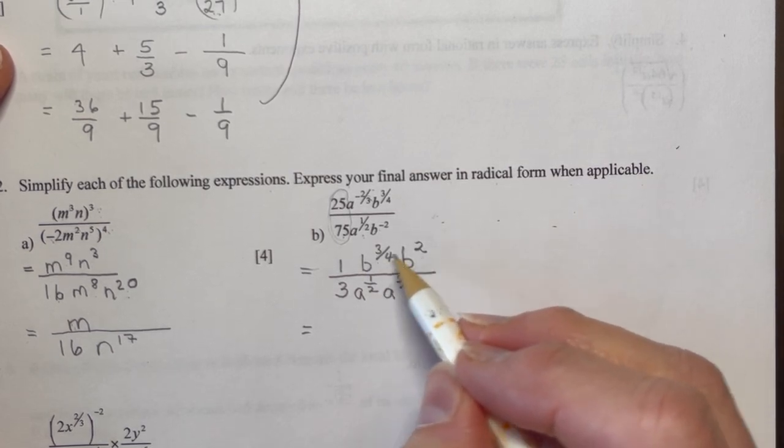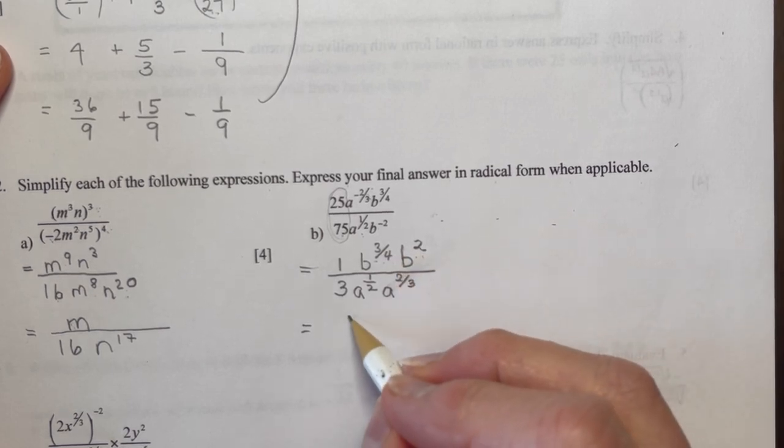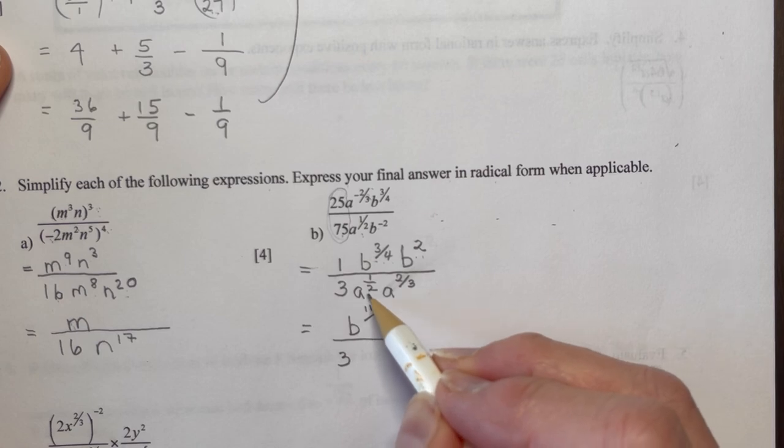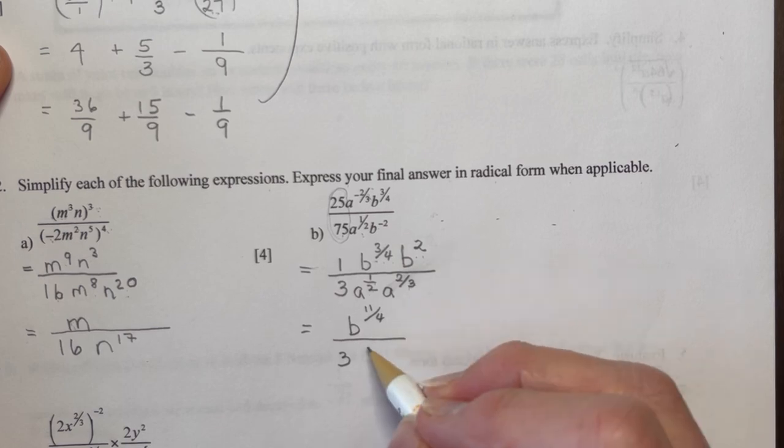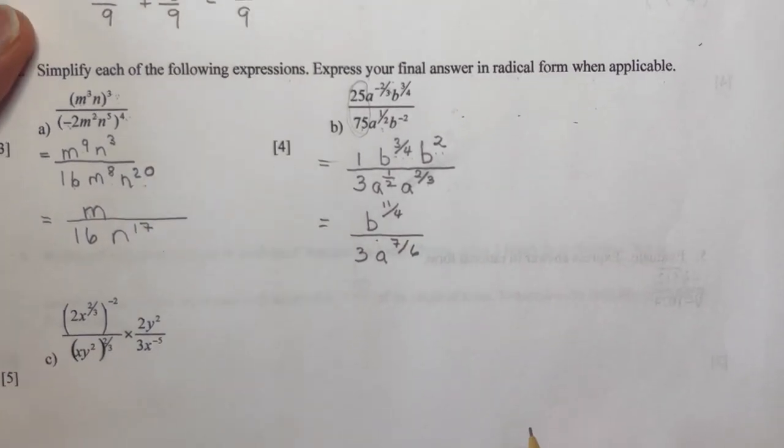So I need these both to be with quarters in the denominator. So this is 8 over 4, 3 over 4, that gives me b to the 11 over 4. And in the denominator, I still have the 3. And I have a's. I'm adding two-thirds or one-half and two-thirds. So I'm going to make them 6. That's 3, 6, 4, 6. That's 7 over 6. And there you go. You already have 11 marks. How clever is that?